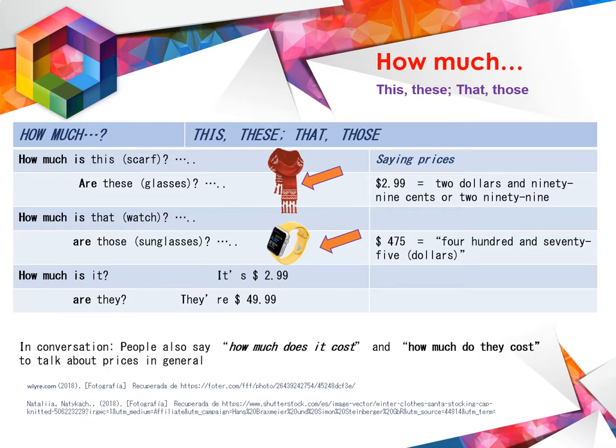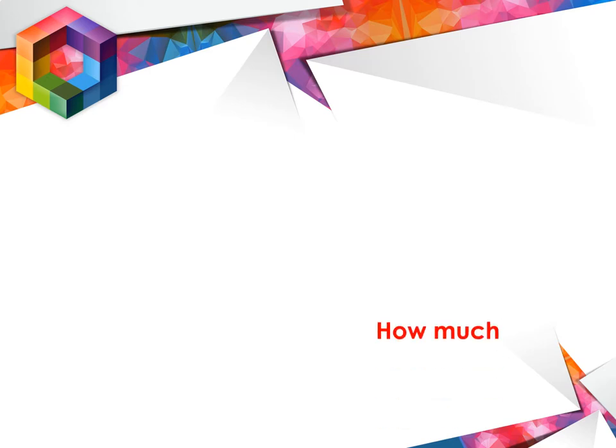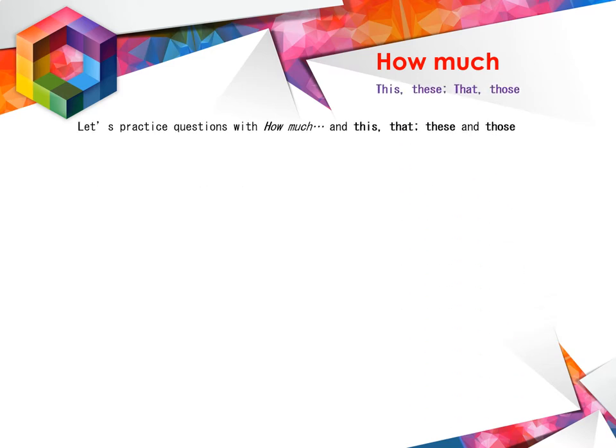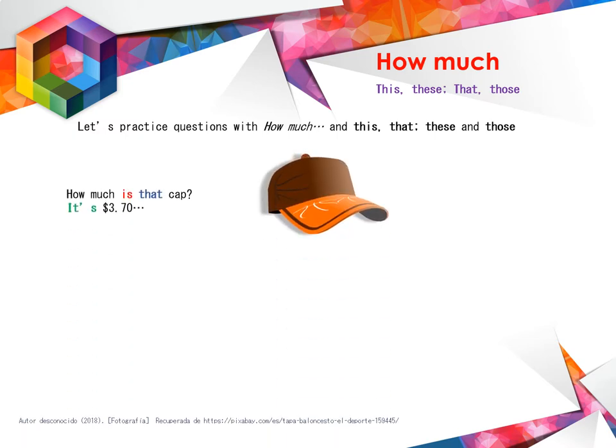To talk about prices in general. Siguiendo con el ejemplo anterior, tendremos la forma de practicar algunas preguntas con how much. Let's practice questions with how much and this, that, these, and those. For example, how much is that cap? — ¿cuánto cuesta esa gorra? It is $3.70. How much are those globes? Or these globes, dependiendo. They are $3.70.